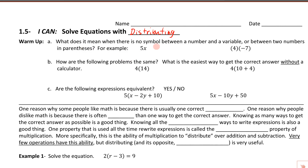The question is: what does it mean when there's no symbol between a number and a variable, or between two numbers in parentheses, or two expressions in parentheses? So if we had a 5 and then an x right next to it, or a 4 and a negative 7 right next to it, what does that mean? Well, that means multiplication. Specifically, we call this implied multiplication. We use multiplication so often in algebra that if they're sitting right next to each other, everybody just understands that's multiplication. So 5x literally means 5 times whatever the value of x is, and 4(-7) means 4 times negative 7.